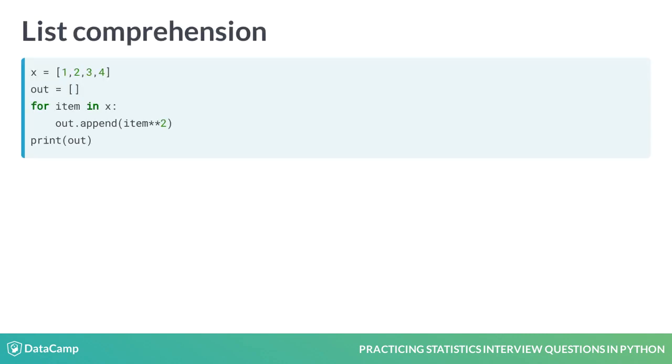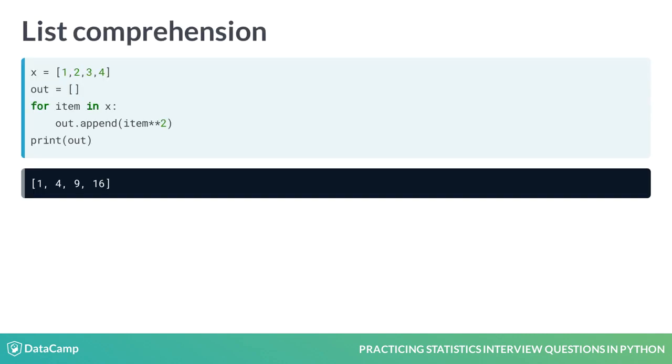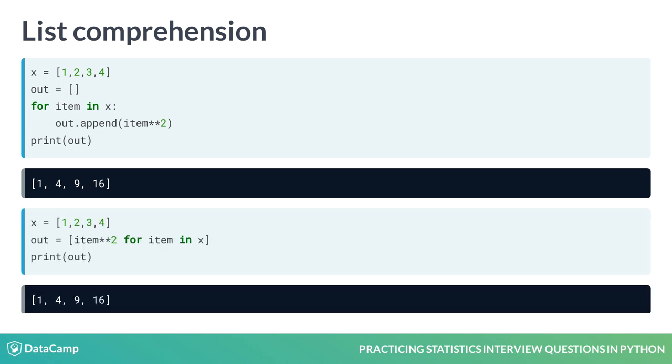Before we wrap up, let's cover list comprehension. List comprehension is a pretty cool Python trick that comes in handy for setting up these numpy simulations, and certain coding interview questions as well. Here you see a snippet of some code that's designed to take in our list and square each value. List comprehension tightens this up by allowing you to execute your for loop in only one line, giving us the same answer.